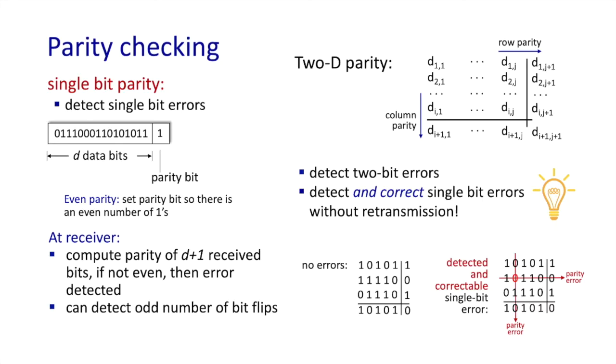Well, this is just a simple example of what are called forward error correction techniques. They're used in DVDs, compact discs, in digital subscriber line, DSL access networks, and in deep space communication where sender to receiver delays are very long. You'd much rather correct an error on receipt rather than having to request and wait for a retransmission.